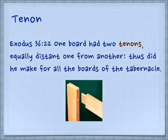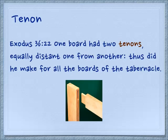Another translation of Yad is 'tenen' — a tenon. Here we see a picture of two boards going together, talking about the construction of the Mishkan, the tabernacle. Exodus 36:22: 'One board had two tenons, equally distant from one another. Thus did he make for all the boards of the tabernacle.' You can see the little piece at the end of the board that slides into the slot — that is the tenon. It looks like a hand.